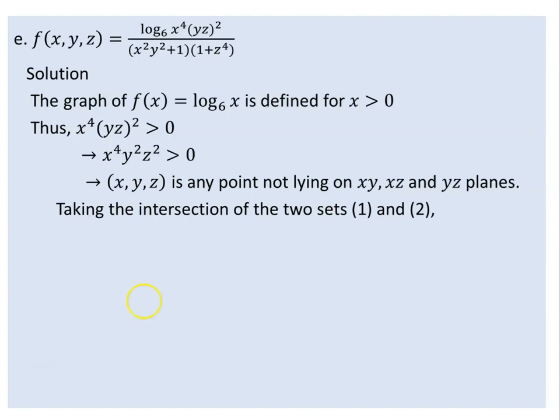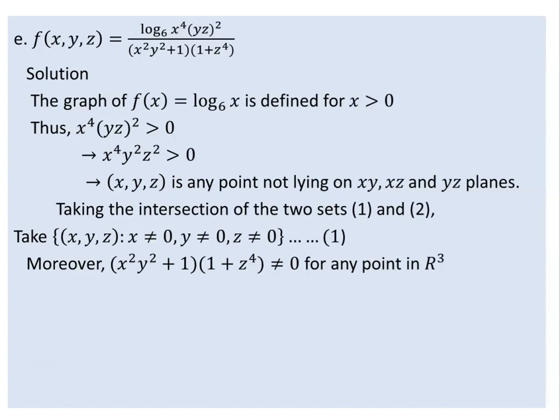Now when we come to the second part, the denominator is x squared y squared plus 1, times 1 plus z to the power of 4. This expression x squared y squared plus 1 plus z to the power of 4 is always greater than zero for any point, so there is no issue with the denominator.